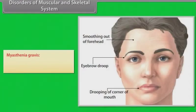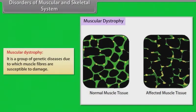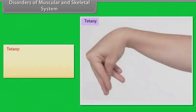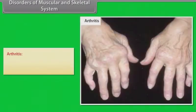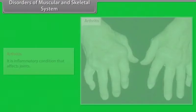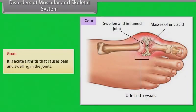Disorders of the muscular and skeletal system include: Myasthenia gravis — an autoimmune disease causing muscle weakness; muscular dystrophy — a group of genetic diseases making muscle fibers susceptible to damage; tetany — an abnormal condition characterized by painful muscular spasms due to faulty calcium metabolism; arthritis — an inflammatory condition affecting joints; osteoporosis — a disease in which bones become extremely porous and prone to fracture; and gout — acute arthritis causing pain and swelling in the joints.